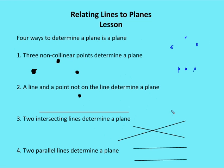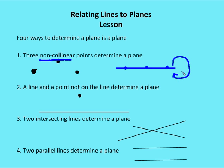There are four ways to determine a plane. First, if I have three non-collinear points, they determine a plane. If I have three collinear points, I can take a plane figure with an edge running through those three points and rotate it 360 degrees around them, creating an infinite number of planes. But three non-collinear points prevent that rotation — the flat figure cannot rotate around those three points without missing one of them.